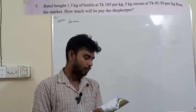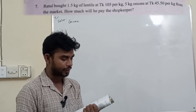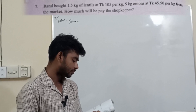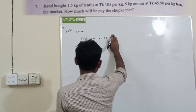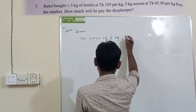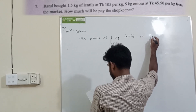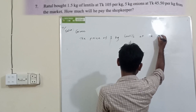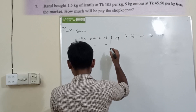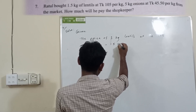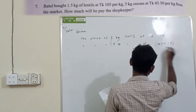Number seven: Ratul bought 1.5 kg of lentils at taka 105 per kg, and 5 kg of onion at taka 45.50 per kg from the market. How much will he pay the shopkeeper? The price of 1.5 kg lentils is taka 105 multiplied by 1.5.